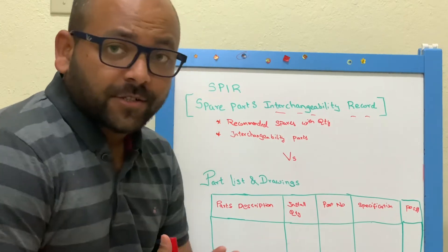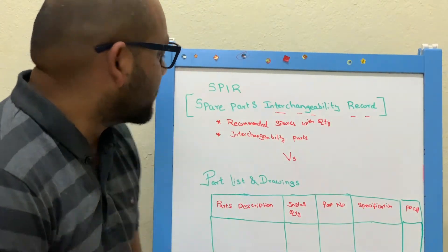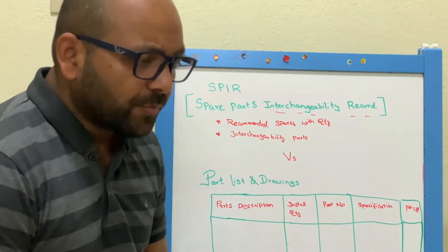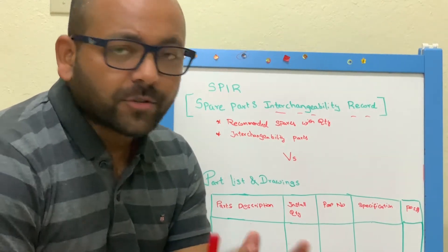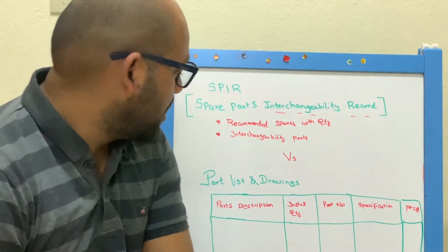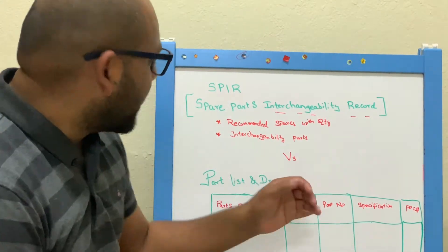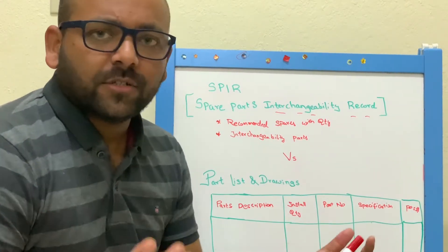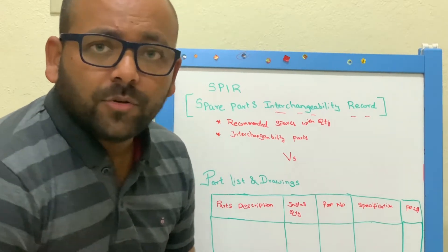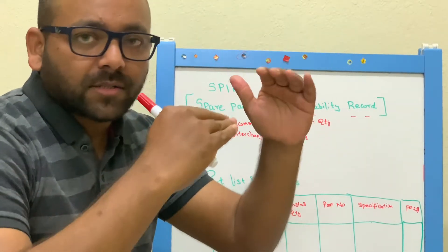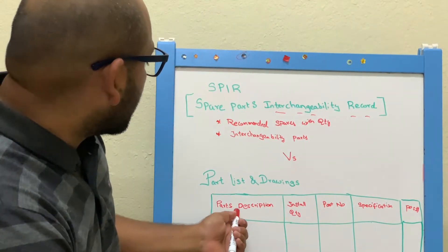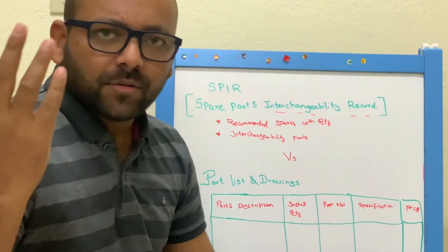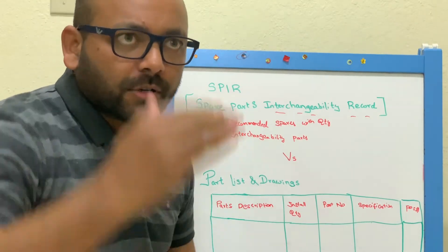Let us have a clear discussion about the difference between the SPIR and the part list and drawings. Generally, if you are in an industry, before starting maintenance activities or planning for some activities on equipment, you will refer to the part list and drawings. By the name itself, it tells you what it is. If you refer to the drawings of major equipment, you can find details of parts with position numbers, part description, install quantity, part number, specification, and the item number.